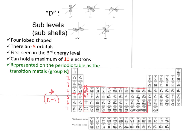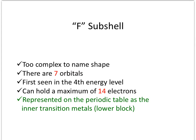The last set of sublevels are the F sub-levels. Their shape is too complex to name. There are 7 orbitals, each holding 2 electrons, for a maximum of 14 electrons. On the periodic table, the first time you'll see them is in the 4th energy level.